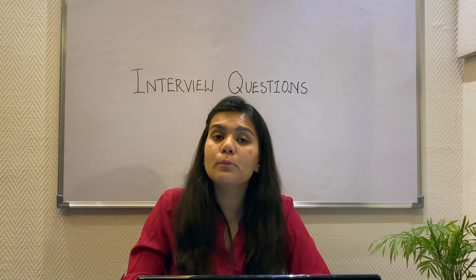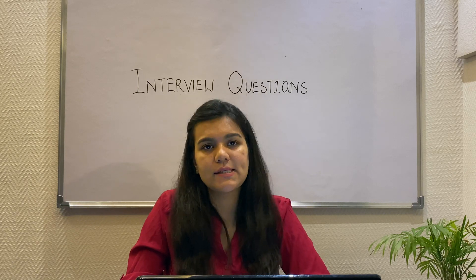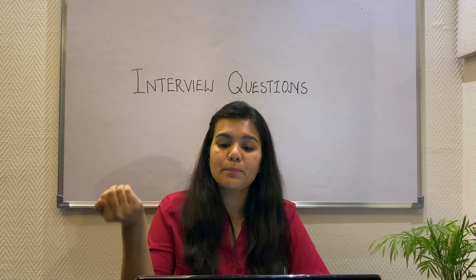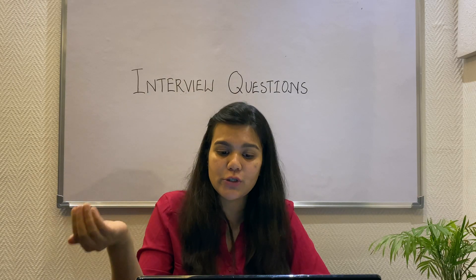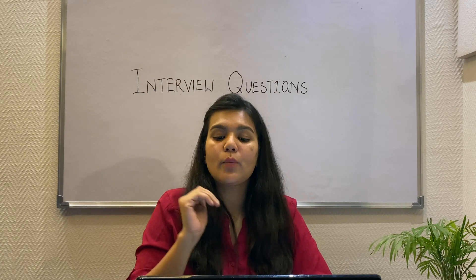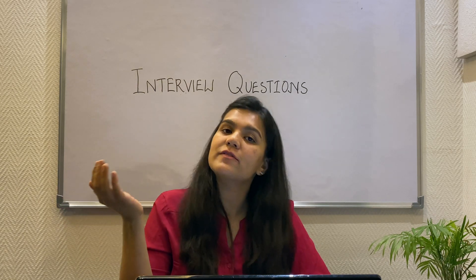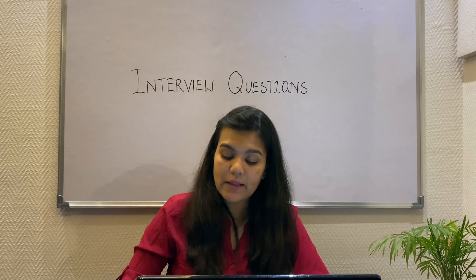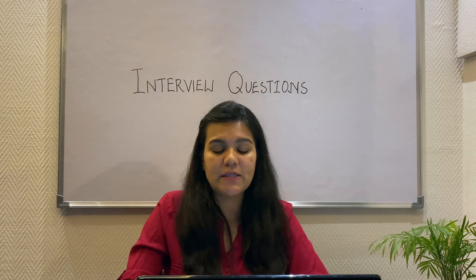Here ends the first question. Moving on to the next question: What is method overriding and what is method overloading, and how are these different? Method overriding is when a child class provides a different implementation for the parent class method, while method overloading is when two or more methods have the same name but different signatures.